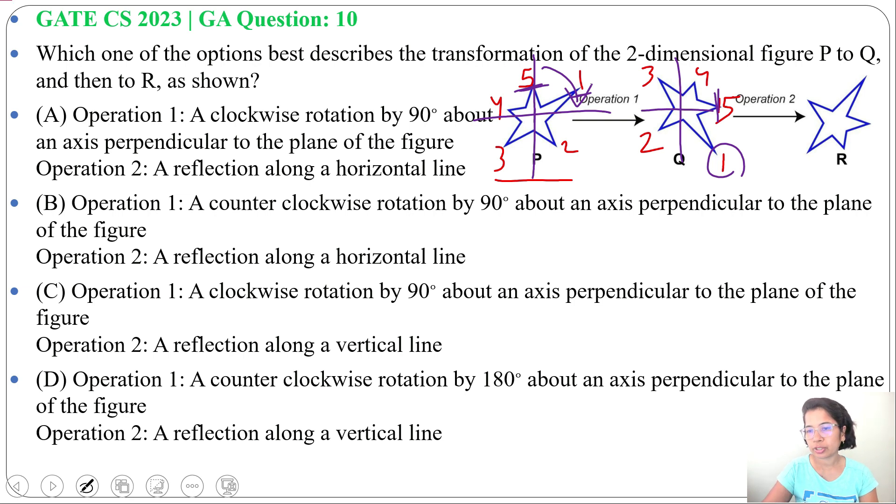So after that, you just mark 1 comes here. Before it was here. Then 5 was at top, now 5 is here. Now check the option.